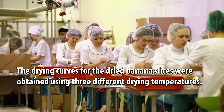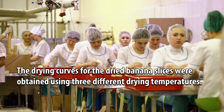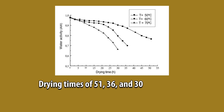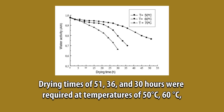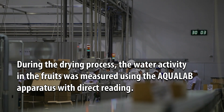The drying curves for the dried banana slices were obtained using three different drying temperatures. Drying times of 51, 36 and 30 hours were required at temperatures of 50°C, 60°C and 70°C respectively to achieve a moisture content of 23.5%.